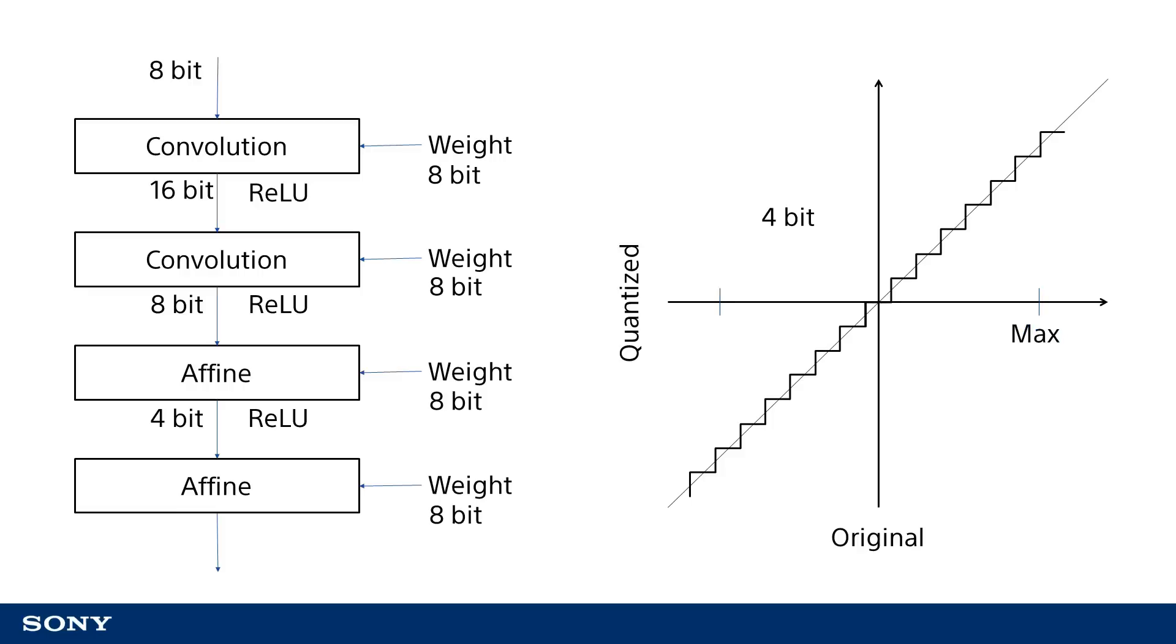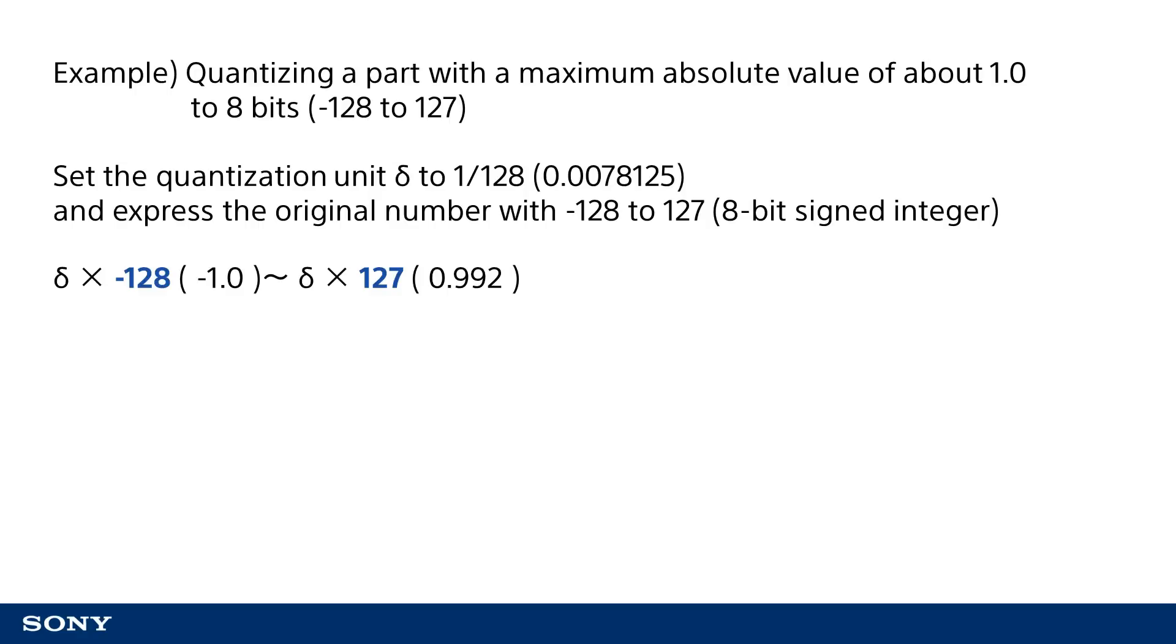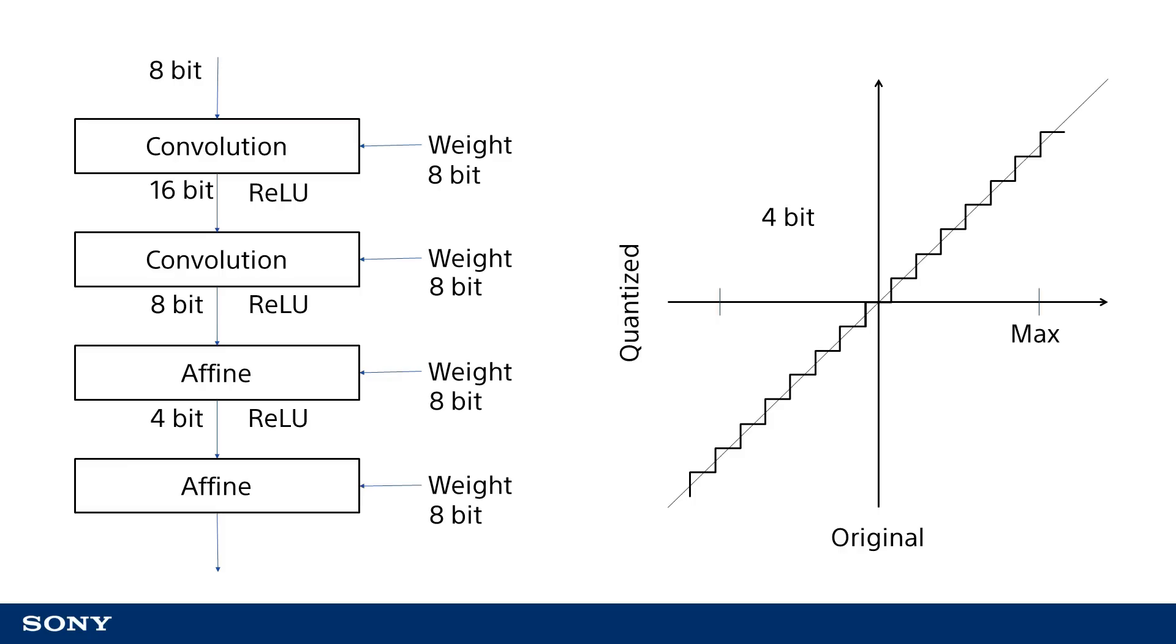The value is expressed as an integer multiple of the minimum quantization unit. If you want to quantize a plus or minus 1.0 floating-point value into 8-bit integer for example, you would choose a value of 1/128th of the maximum value as the unit of quantization resulting in the floating-point value being represented by an 8-bit signed integer. In doing this, actual calculations will be performed using the quantized values.